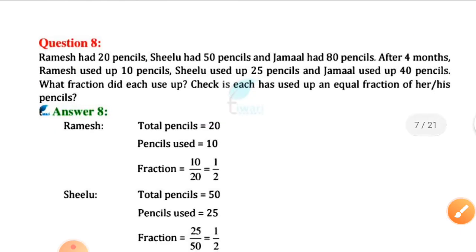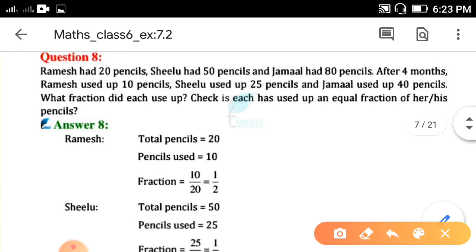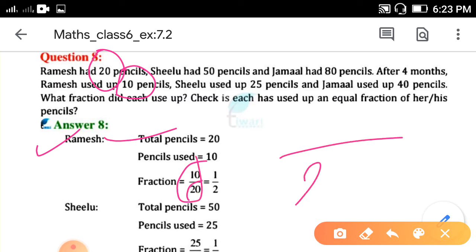Again you need to find out the fraction. As per the formula, for Ramesh first one, total pencils 20, out of 20 he used up 10 pencils. So fraction - in the denominator, we are going to write total quantity and the numerator shaded portion or used portion. So, 10 upon 20, zero zero cut, here it remains 1 upon 2.